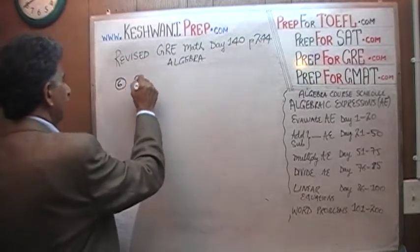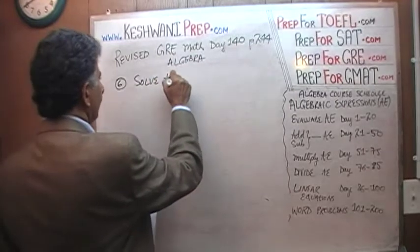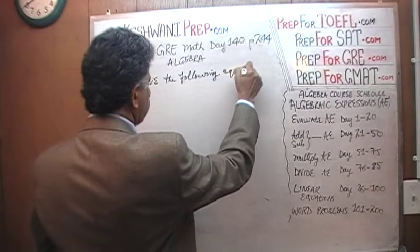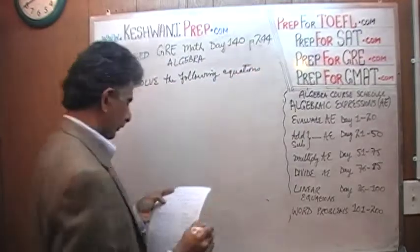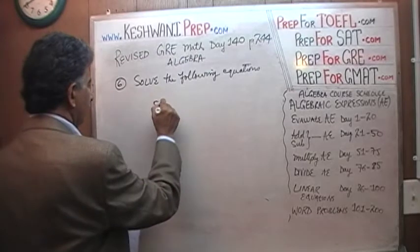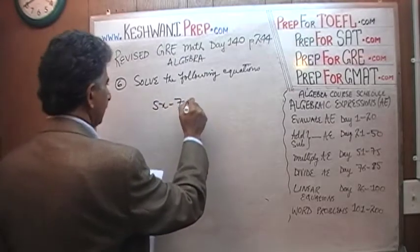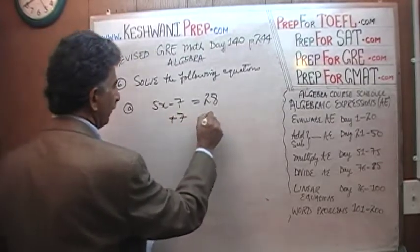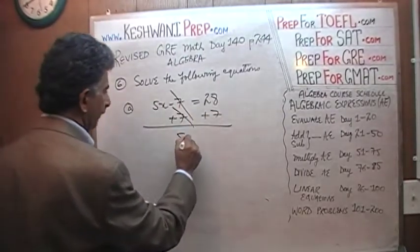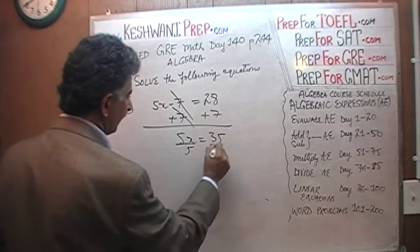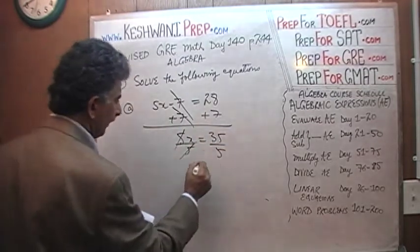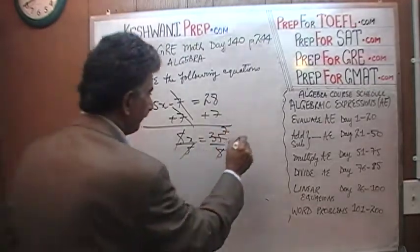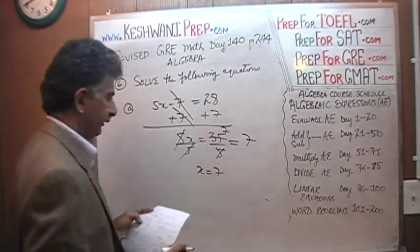It simply says: solve the following equations. So that's what we shall do. The first one says 5x minus 7 equals 28. Very simple, very straightforward. Let's add 7 to both sides — the 7 cancels out and 5x equals 35. Divide both sides by 5; the 5 cancels out and x equals 35 divided by 5, which is 7. That's your x — x equals 7.